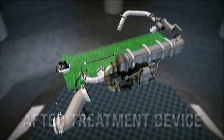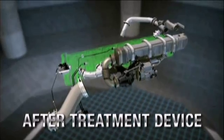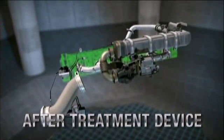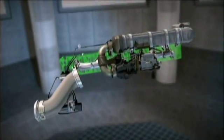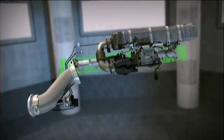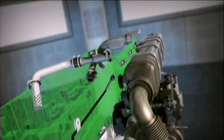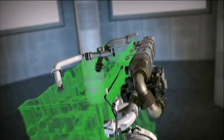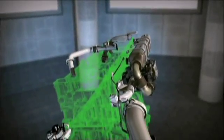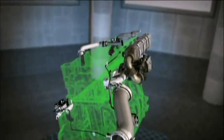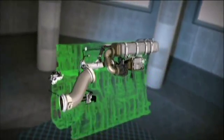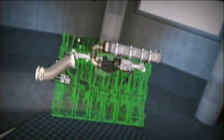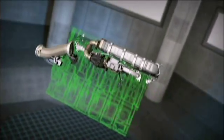The system also includes an after-treatment device that uses a diesel particulate filter, along with diesel oxidation catalysts and a fuel doser to reduce emissions further. Together, the EGR and after-treatment systems are designed to meet 2007 federal emissions requirements for heavy-duty diesel engines. The forward-thinking design also minimizes changes required for 2010 emission certification.